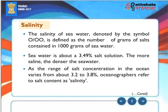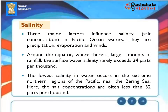Salinity: The salinity of seawater, denoted by the symbol ‰, is defined as the number of grams of salt contained in 1,000 grams of seawater. Seawater is about 3.49% salt solution; the more saline, the denser the seawater. As the range of salt concentration in the ocean varies from about 3.2 to 3.8%, oceanographers refer to salt content as salinity. Three major factors influence salinity in Pacific Ocean waters: precipitation, evaporation, and winds. Around the equator, where there is large amounts of rainfall, surface water salinity rarely exceeds 34 parts per thousand. The lowest salinity occurs in the extreme northern regions near the Bering Sea, where salt concentrations are often less than 32 parts per thousand.